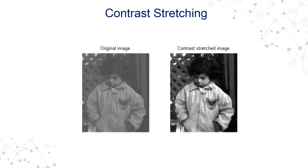A low contrast image could be due to bad or non-uniform illumination conditions, or it could be due to non-linearity in the acquisition devices. What we do in contrast stretching is remap a particular range of pixels to different levels so that the image is enhanced. We take values from the dark or near-black range and expand or stretch them to a wider range of values, increasing the contrast.